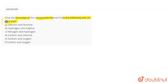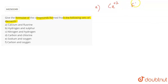The question asks to give the formula of compounds formed from the following sets of elements. The first one is calcium and fluorine. The symbol for calcium is Ca and for fluorine is F. Calcium has a tendency to lose two electrons, giving it a valency of +2, while fluorine needs one electron to complete its octet, giving it a valency of -1. Interchanging the valencies gives the formula CaF₂.